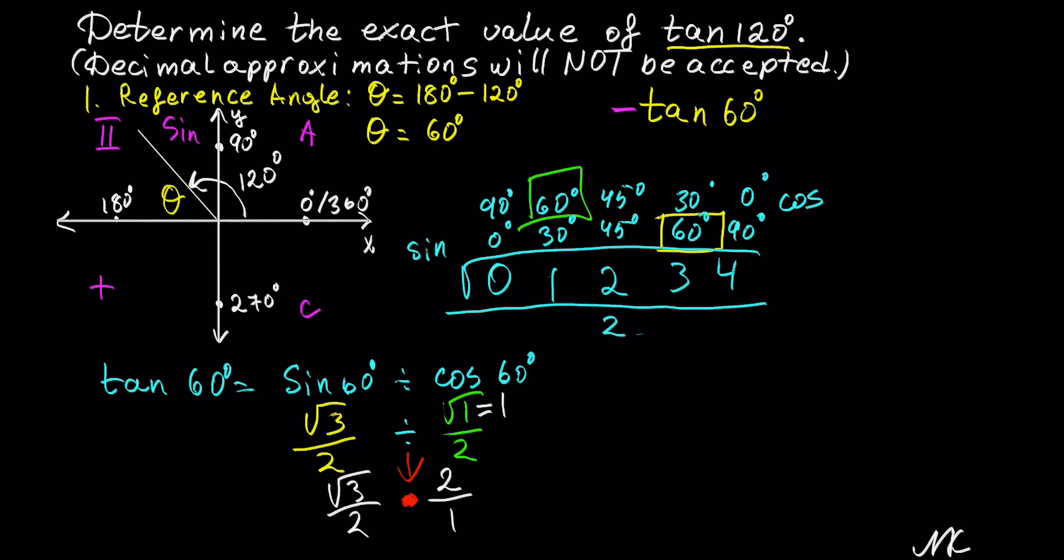We can reduce numerator and denominator by 2. So 2 and 2 will cancel, and we get that tangent of 60 degrees is equal to radical 3.